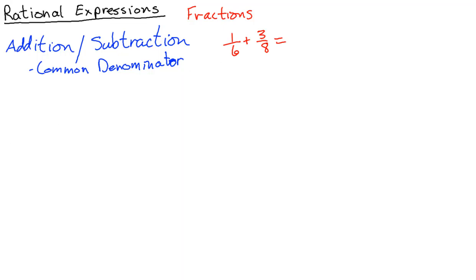So for 1/6 plus 3/8, the common denominator is 24, since both 6 and 8 go into 24. We multiply the first fraction by 4/4 and the second by 3/3, giving us 4/24 plus 9/24, which equals 13/24. The denominator is the label — we get 4 of those 24ths plus 9 of those 24ths equals 13 of those 24ths.